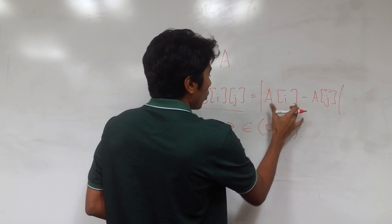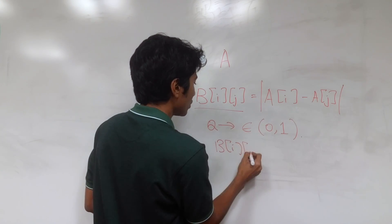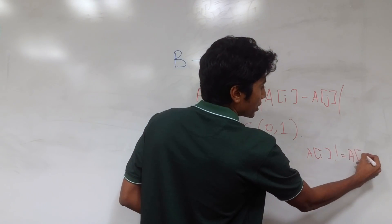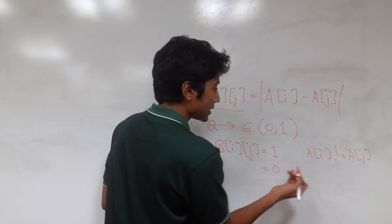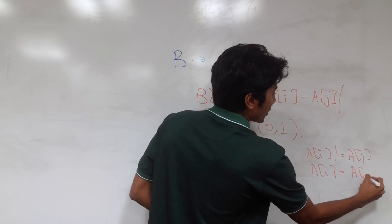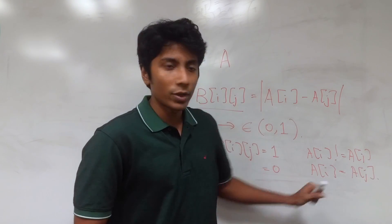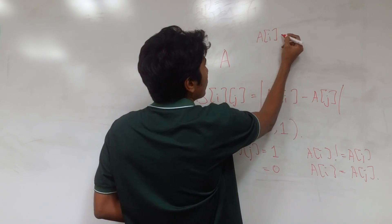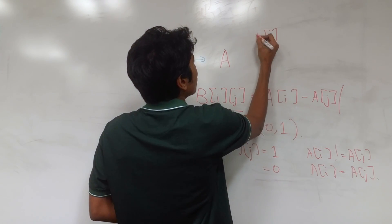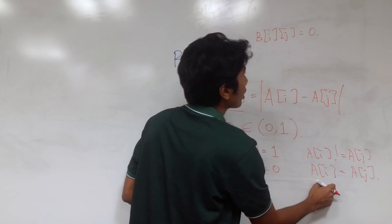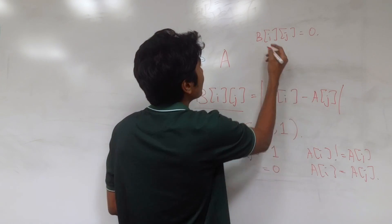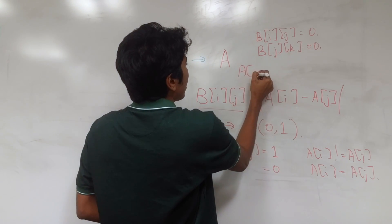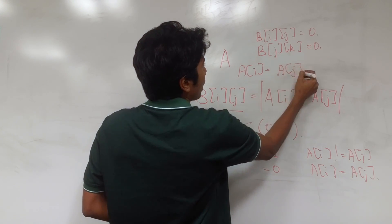So if B[i][j] is 1, then A[i] is not equal to A[j] because there is a difference. But if it is 0, then A[i] is actually equal to A[j]. If B[i][j] = 0 and B[j][k] = 0, then we have A[i] = A[j] = A[k].